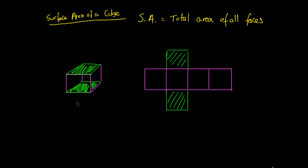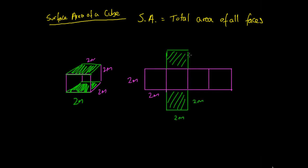Say this was a cube where we had side lengths of 2 metres — we'd know that the length of all of the sides, because it's a cube, must be 2 metres. So we'd have 2 metres on every single side. If we come over to this flattened out cube, we know that every side must be 2 metres in length.